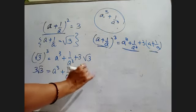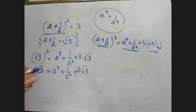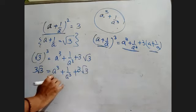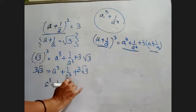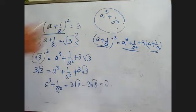So we have 3√3 = a³ + 1/a³ + 3√3. Now if this 3√3 is brought to this side, what is going to happen? a³ + 1/a³ is equal to 3√3 - 3√3, which equals zero.